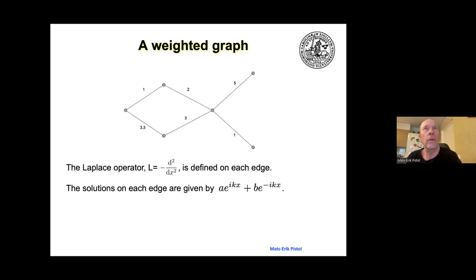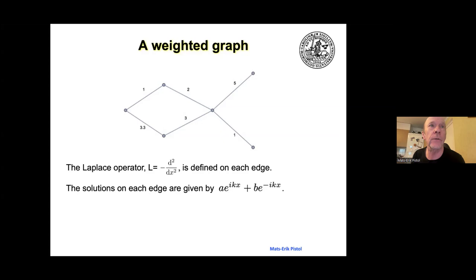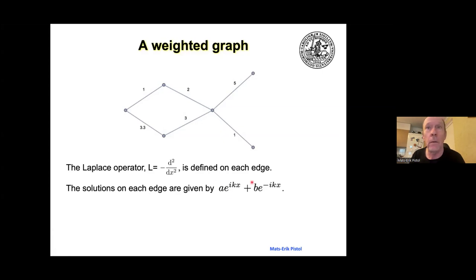I'm working on weighted graphs, and this is one example. We have standard graphs — in my case most often equilateral, so each edge has length one. That's not necessary though. It's a compact graph, meaning there's a finite set of edges, the length of each edge is finite, and there's a finite number of edges. The graphs are always connected. In each edge we define the Laplace operator, and the solutions on each edge are given by this expression.